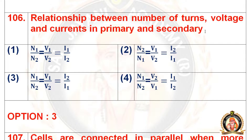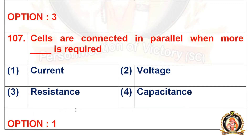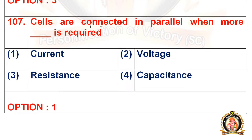Question 106: The relationship between the number of turns, voltage and current in primary and secondary. Options include N1/N2 = V1/V2 = I1/I2, N2/N1 = V1/V2 = I2/I1, N1/N2 = V1/V2 = I2/I1, and N1/N2 = V1/I2. The right option is the third option: N1/N2 = V1/V2 = I2/I1.